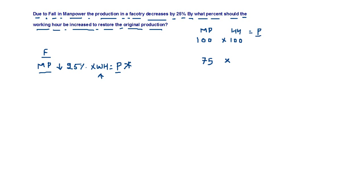And this has to be increased so we will assume that this is increased by x. This equals the original production which is 100 into 100. This is the original production.